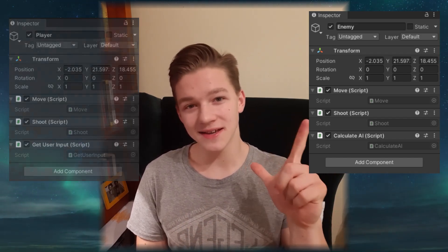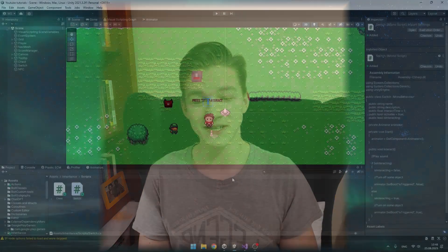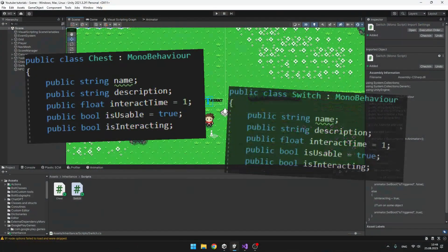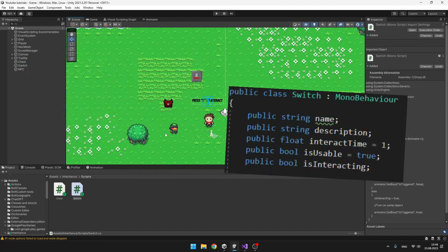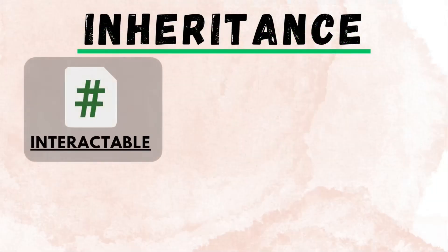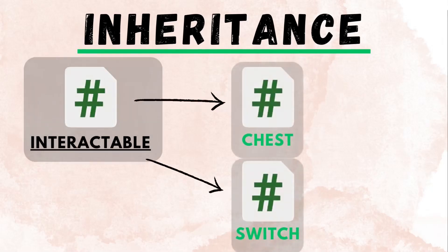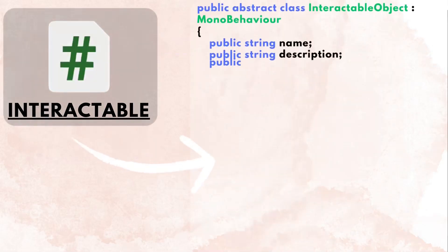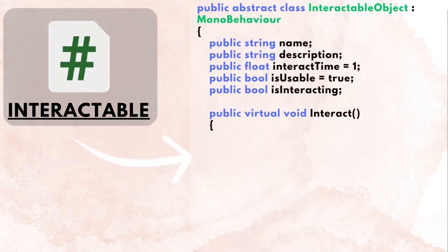The second technique, which allows you to achieve pretty much the same thing as composition, is inheritance. When you have many scripts and find that they share some functionality, you can make a parent class that will have the functions, variables and all the stuff those classes had in common, and the other classes will derive from it.